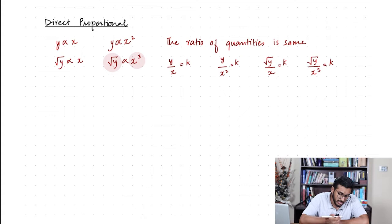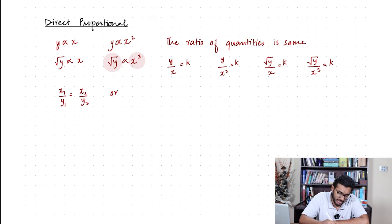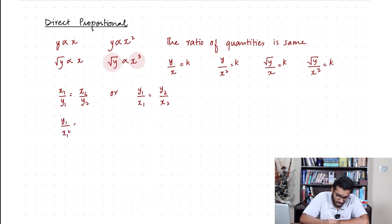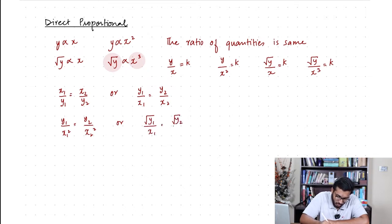If two quantities are directly proportional, I can say x₁ over y₁ equals x₂ over y₂. Or you can write y₁ upon x₁ equals y₂ upon x₂. You can even write it as y₁ upon x₁² equals y₂ upon x₂². Or you can write it as √y₁ upon x₁ equals √y₂ upon x₂.